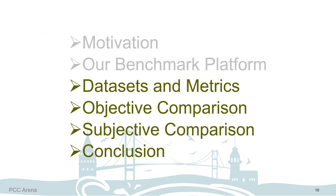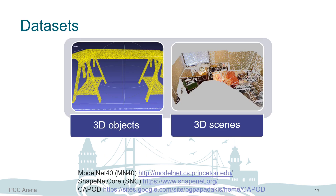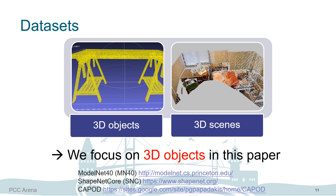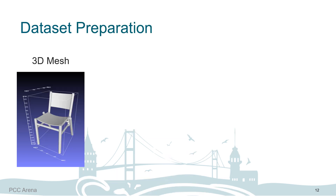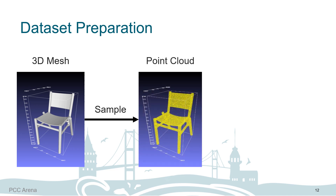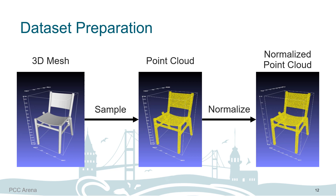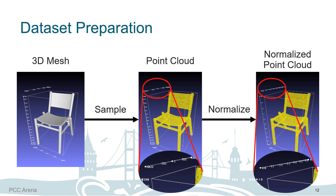Let's look at datasets and metrics. Public 3D datasets are classified into 3D objects and 3D scenes. In this paper, we focus on 3D objects. Those datasets are 3D meshes. To get the point cloud datasets we use in PCC Arena, we first render sampled points on the 3D mesh — the number of sampled points is a user-defined variable — then we get the point cloud in the same scale as the 3D mesh. To fairly compare results from the performance evaluator, all point cloud scales must be the same, so we do normalization. The scale of the normalized point cloud is bounded from 0 to 1.